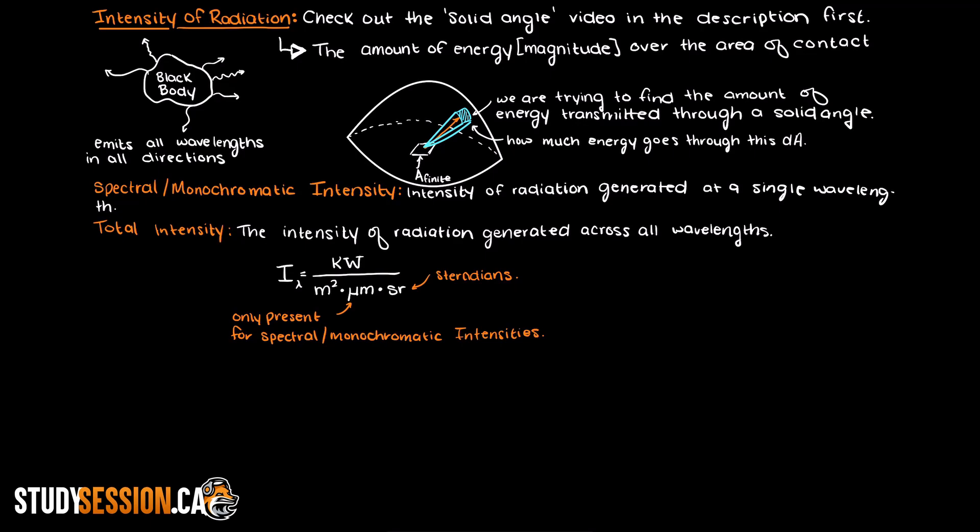Now, we can state a few facts that we know about black bodies. We know that a black body will emit radiation of all wavelengths in all directions.